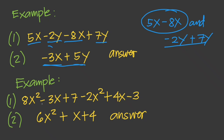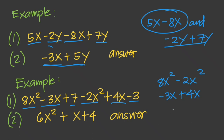Another example: 8x squared minus 3x plus 7 minus 2x squared plus 4x minus 3. We combine like terms: 8x² and negative 2x² are alike, negative 3x and positive 4x are alike, and 7 and negative 3 are alike. So 8x² minus 2x² equals 6x², negative 3x plus 4x equals positive x, and 7 minus 3 equals 4. Our final answer is 6x² plus x plus 4.